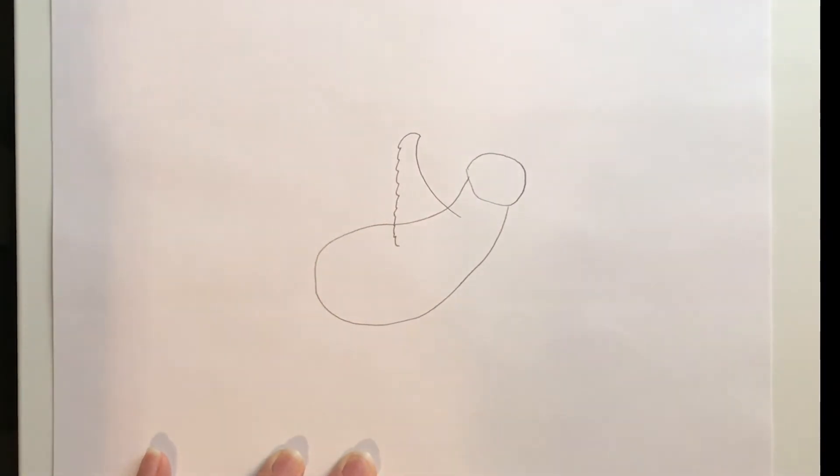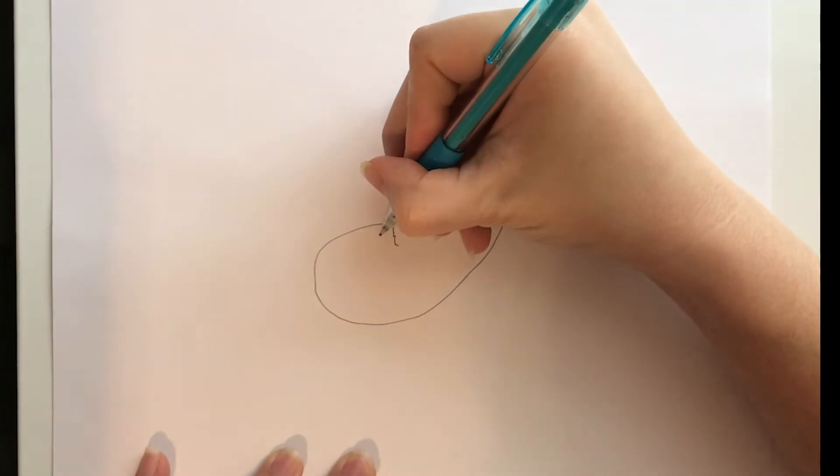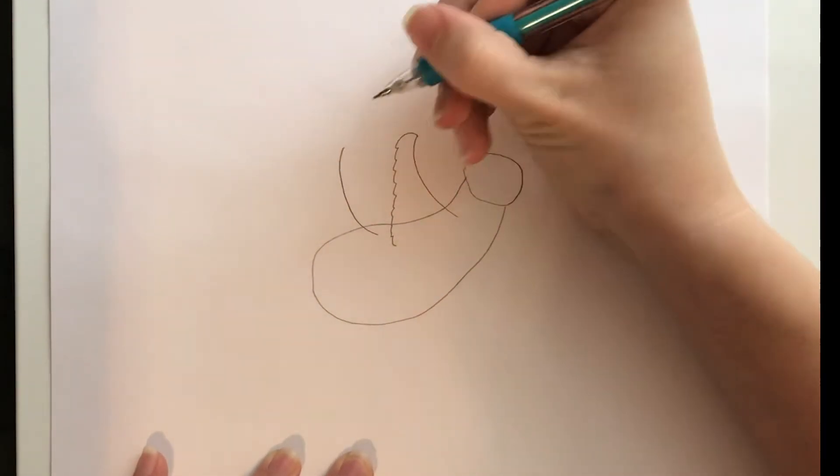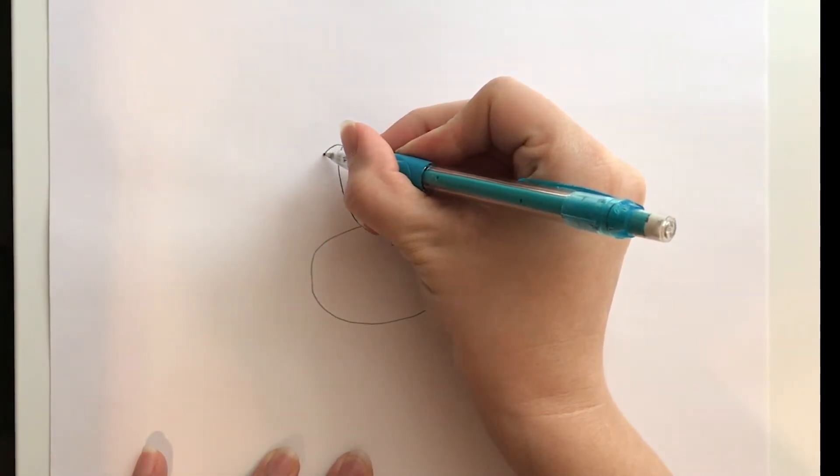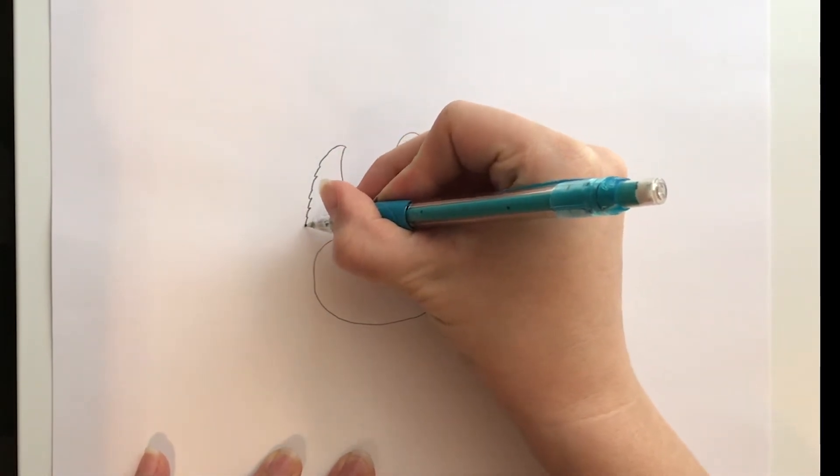You can't tell it yet but our sloth is going to be holding on to a tree branch. That's why the paws are cupped. I'm bringing the second leg all the way up as high as the first one because both legs are holding on to the tree branch.